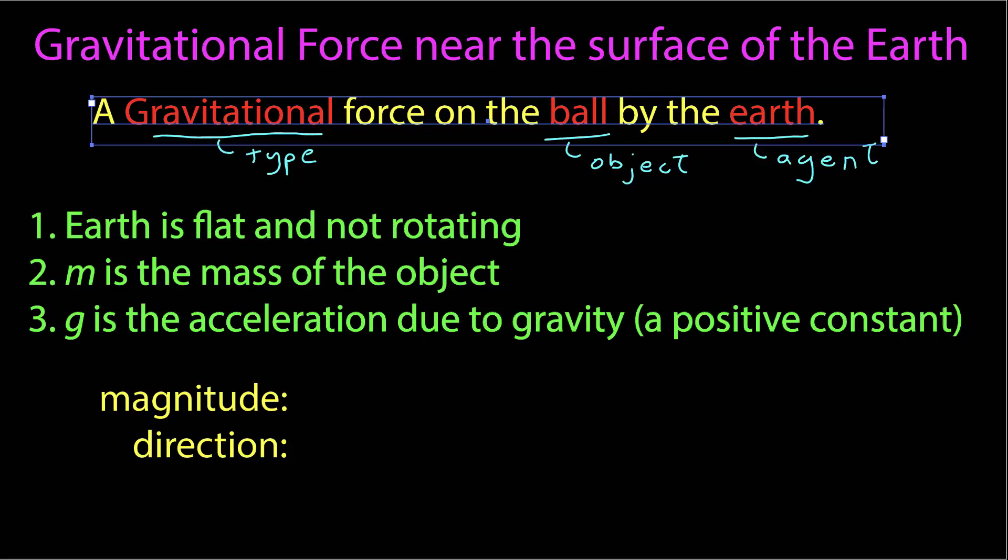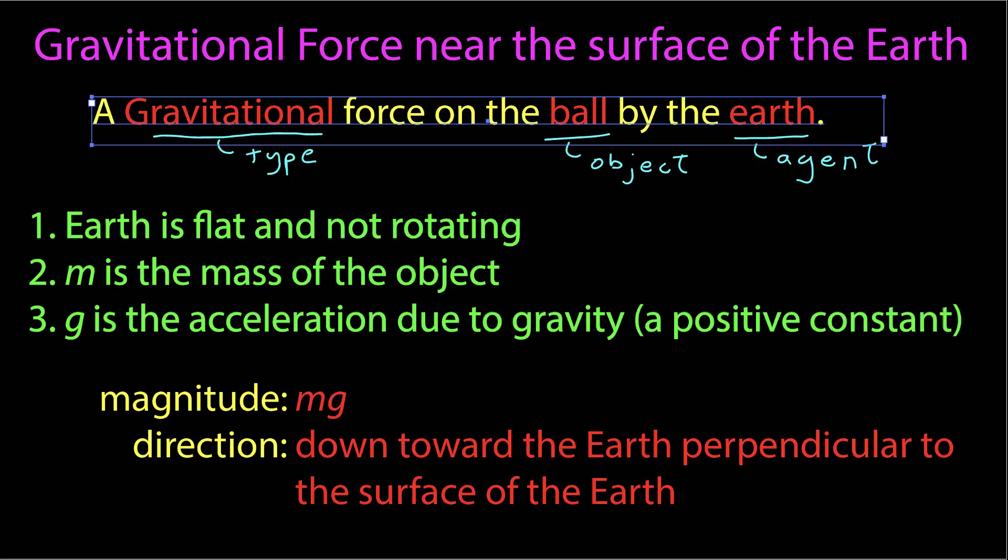Since our force is a vector, our model will give us a magnitude and a direction for the force. The magnitude will be the mass times g, the acceleration due to gravity. This is a positive number since both quantities are positive. The direction is down toward the Earth, perpendicular to the surface.